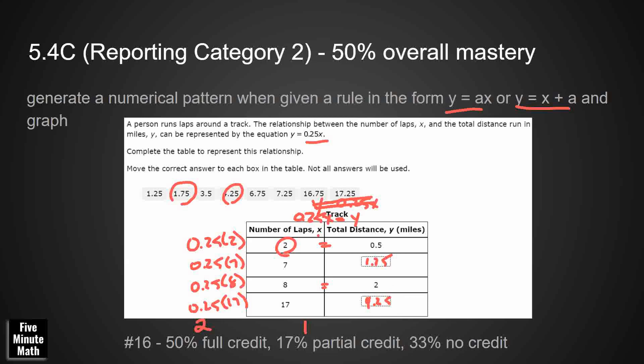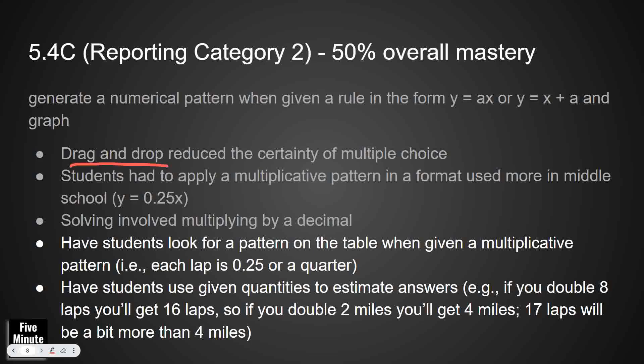Hopefully students saw that if we're doing this 0.25, think of quarters. And when we think 0.25, we should think 25 cents. 2 quarters made 50 cents. 7 quarters made $1.75. 8 quarters makes $2. And then so 17 quarters. Multiplying by 0.25 is hard. Adding a whole bunch of quarters for students, usually they can do that. They're pretty good at skip counting by 25s. So let's see what some of our instructional implications are. First, why is it difficult? Well, we had drag and drop. So that always reduces the certainty of multiple choice. And then we had to apply this multiplicative pattern on y equals 0.25x. And then we had to flip it. We had to flip it like this. That's something that's going to be used a lot in middle school. And it's something they should be able to do in fifth grade.